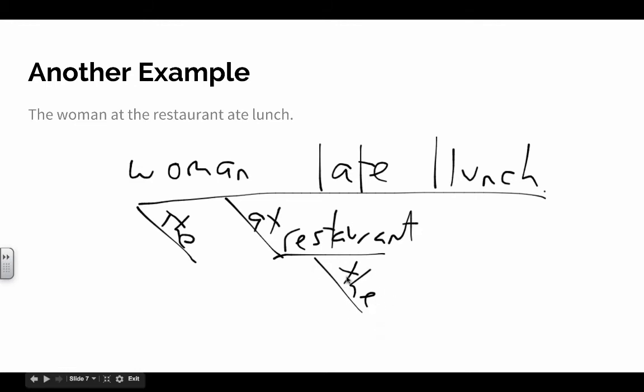The is modifying restaurant, so the goes in this diagonal line right here. If I said the woman at the purple restaurant ate lunch, then purple would go in a diagonal line also as well over here. So that is how we diagram prepositional phrases.